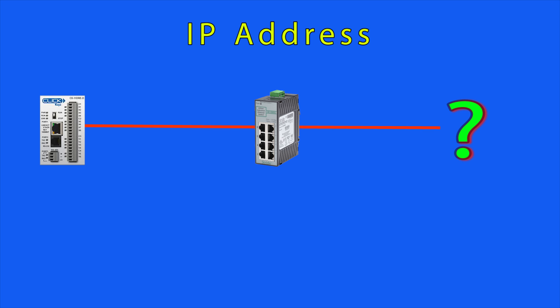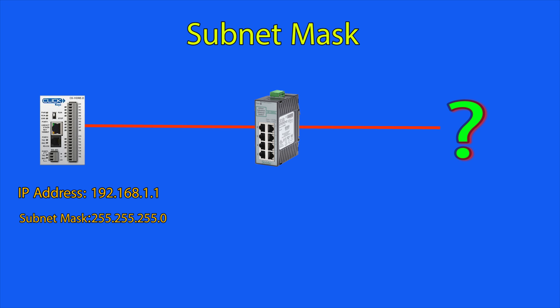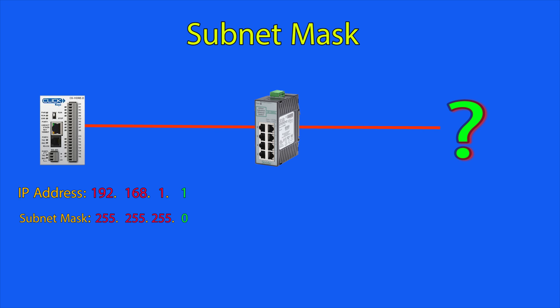How can you determine what this PLC can talk to? This is done by using the IP address along with the subnet mask. The subnet mask is also made up of four number groups, and each number group matches up to the IP address number group to define what it can talk to. If the subnet mask number portion is 255, this means that the IP address number portions must match for communication. When the subnet mask's octet is 0, however, the IP address's number portions can be any valid number in the range.